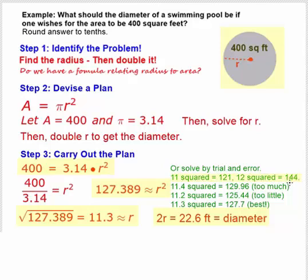That tells us that our answer is in between 11 and 12. 11.4 squared is 129.96, which is too much. But if we go down to 11.2 and square it, we get 125.44, which is not enough.